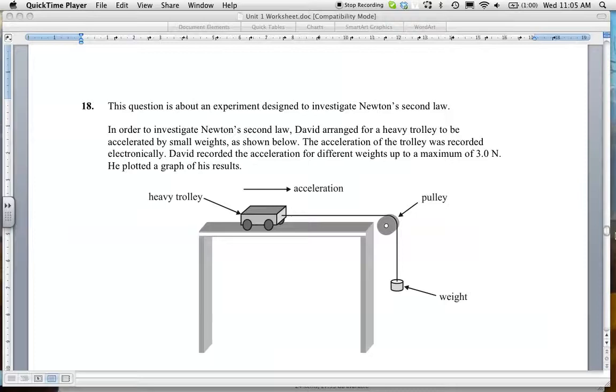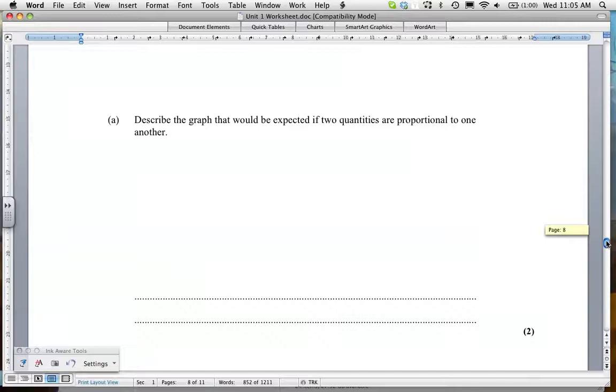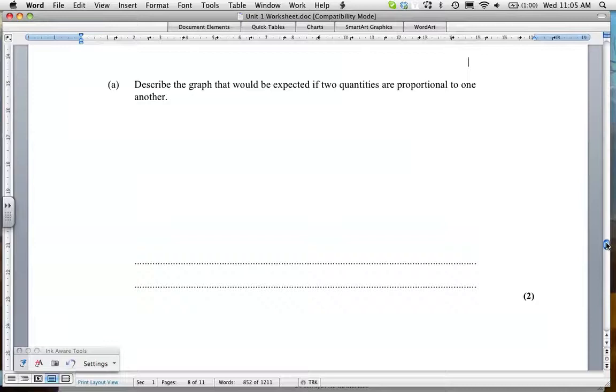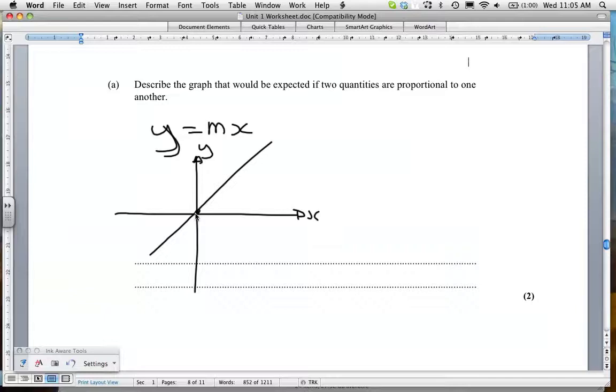Going down to the first question here. This is very important. It's to describe the graph that you would expect if two quantities are proportional to one another. A proportional graph is of the form Y equals MX. It's your straight line graph. It actually goes through the origin, through the center point. It's a straight line, so the slope, the gradient, the M is constant. The rise over the run will give you your slope, and it will always go through the origin.